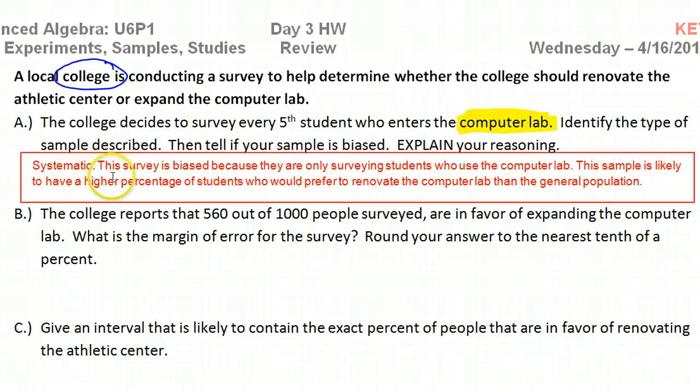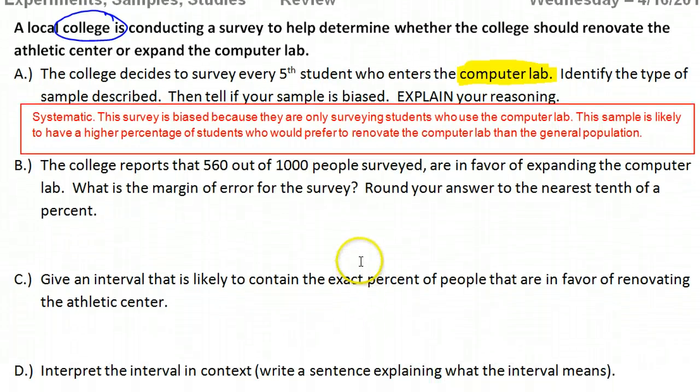I could say systematic. This survey is biased because they are only surveying students who use the computer lab. This sample is likely to have a higher percentage of students who would prefer to renovate the computer lab compared to the general population. What about question B?